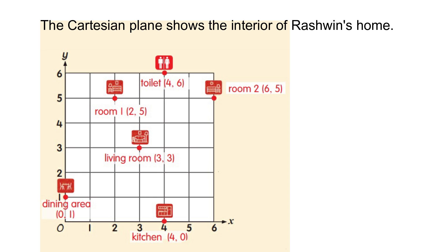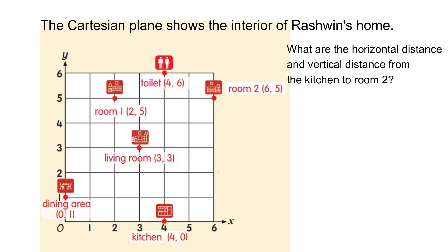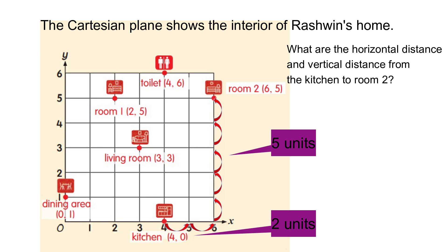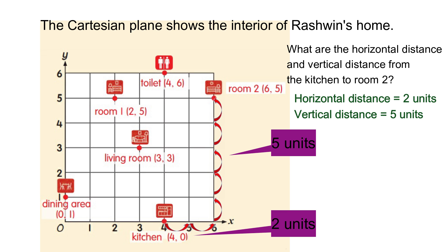Now look at this example. The Cartesian plane shows the interior of Rashwin's home. What are the horizontal distance and vertical distance from the kitchen to room two? Start moving from the kitchen and count the units as you move. From the kitchen to go to room two, move two units to the right. So the horizontal distance will be two units and the vertical distance will be five units.